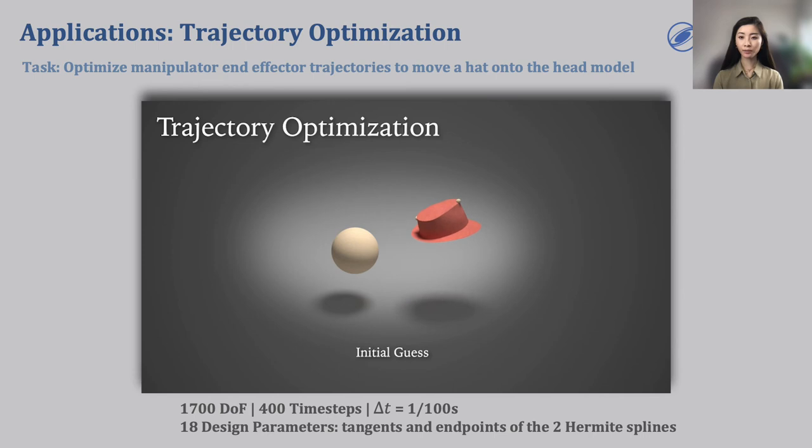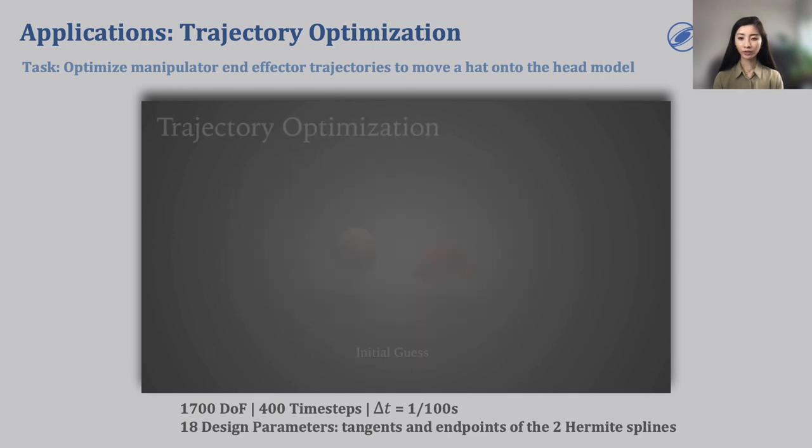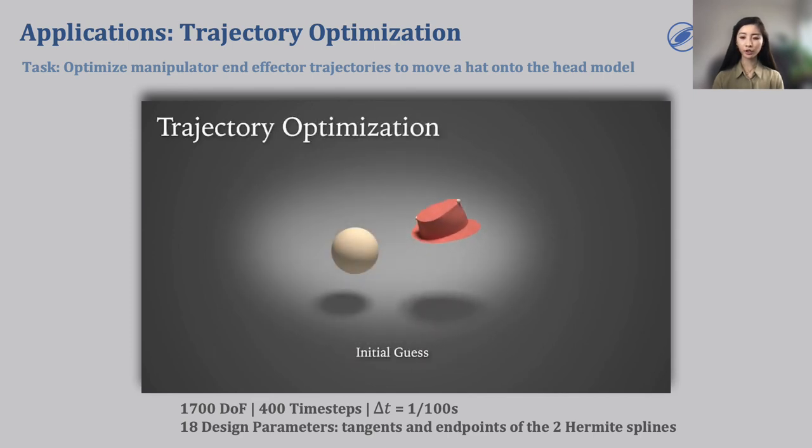In this trajectory optimization task, we seek to optimize the motion trajectory of two end-effectors holding a hat. The goal is to move the hat onto the head model by optimizing the parameters of the splines controlling the trajectory of the end-effectors. The trajectories of the two end-effectors are modeled by Hermite splines, where each of them is parameterized by start and end positions and the tangent vectors. In our experiments, the task can be successfully completed with various initial trajectories.